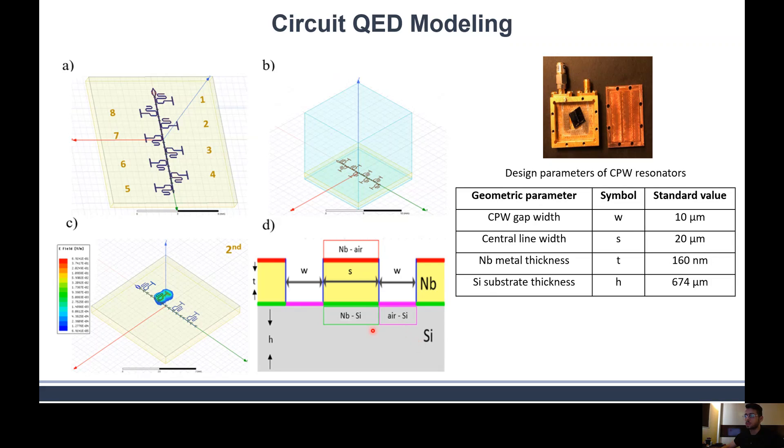We have the geometric parameters described in this table, including CPW gap width, central line width, niobium thickness, and substrate thickness. We have three important geometric parameters, which are the interfaces shown in different colors: the pink air-silicon interface, niobium-silicon interface in green, and the red one, which is the niobium-air interface. These three interfaces are major causes limiting the Q factors, because these are the regions where oxide and contamination can grow.